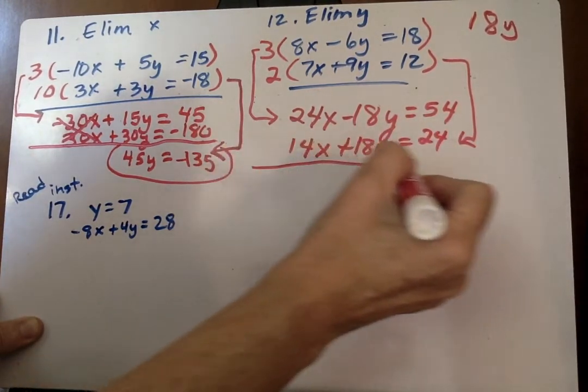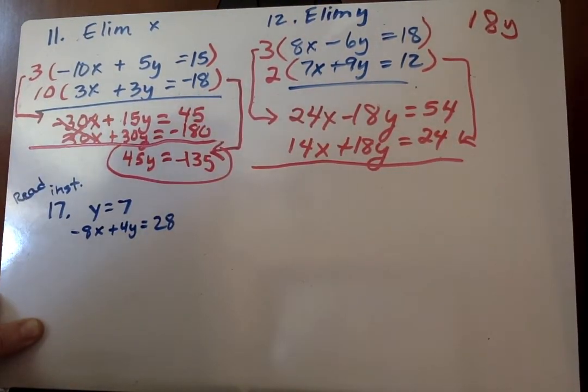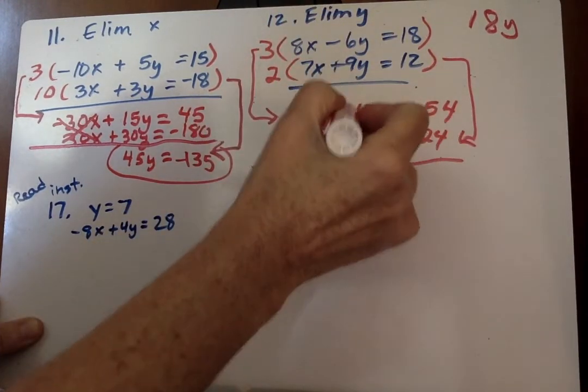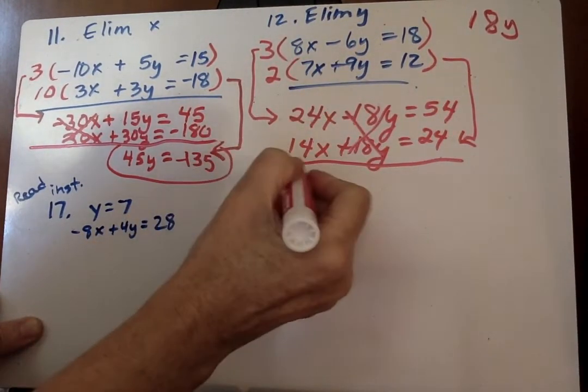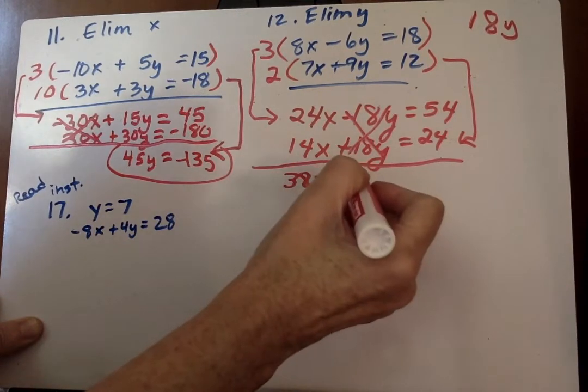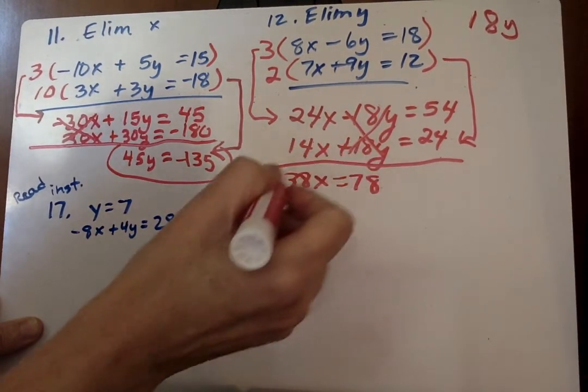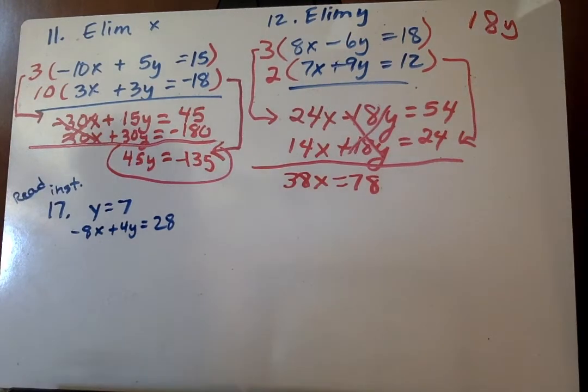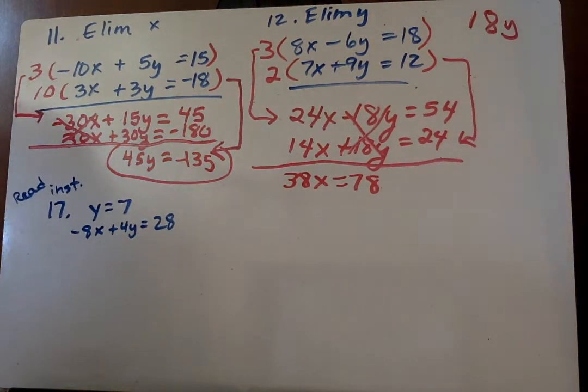Now again, when I add them together, I should be able to eliminate one of the variables, and it tells us y on that one. So then I get 38x equals, I believe, 78, and we don't have to solve the rest from there. That's all we had to do.